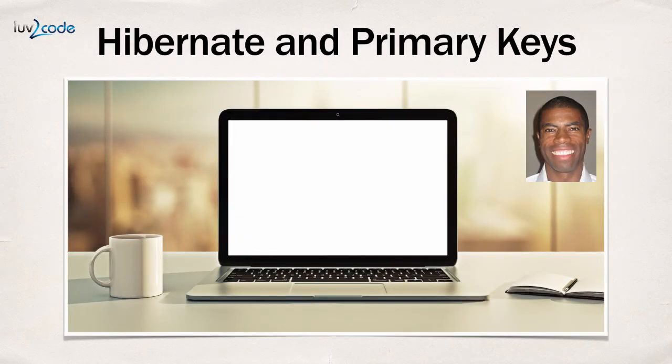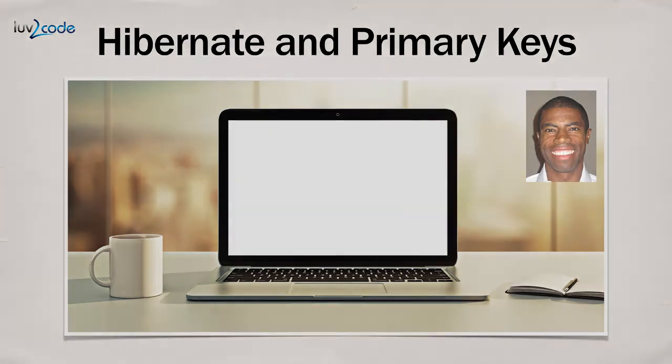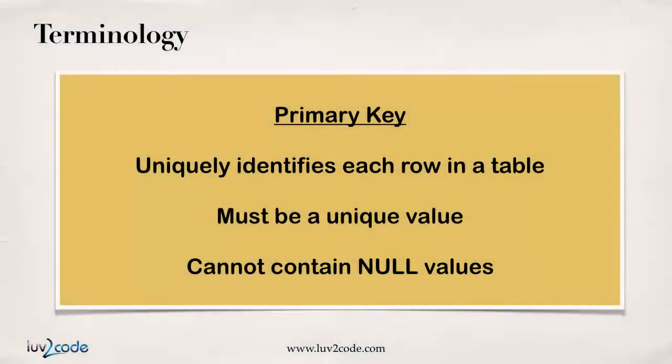In this video, we're going to talk about Hibernate and primary keys. What exactly is a primary key? It's basically a way that you can uniquely identify a row in a table. This is a unique value across that given table, and also it cannot contain any null values.